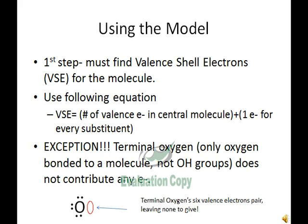The number of VSC is the number of valence electrons in the central atom, plus one electron for every substituent. The central atom is chosen as the least electronegative — so the furthest away from fluorine on the periodic table. There is an exception in that terminal oxygen does not contribute any electrons. As you can see in the Lewis dot structure below, all of the six valence electrons in oxygen pair with themselves, so there's none to give to the central atom.